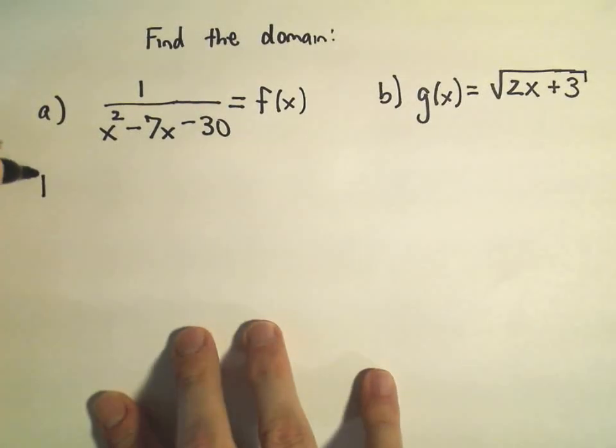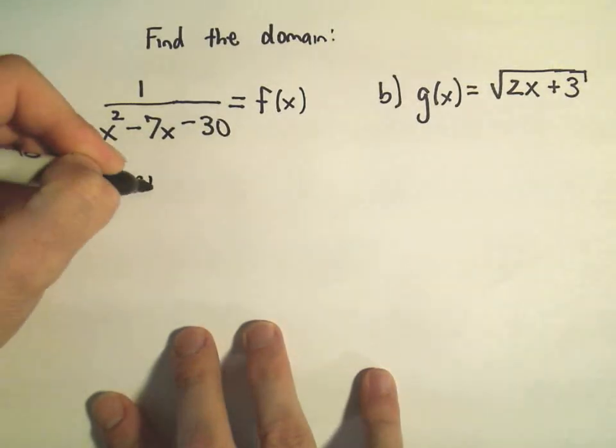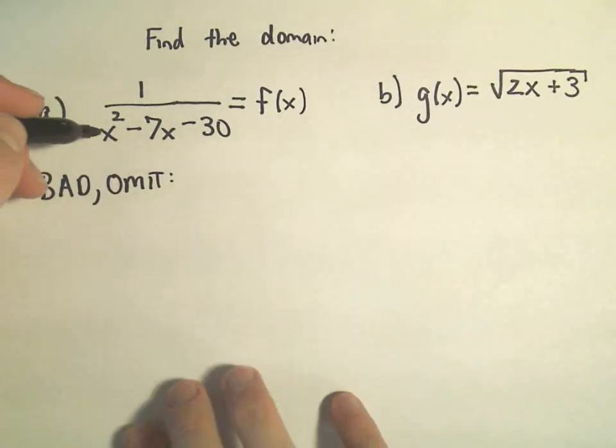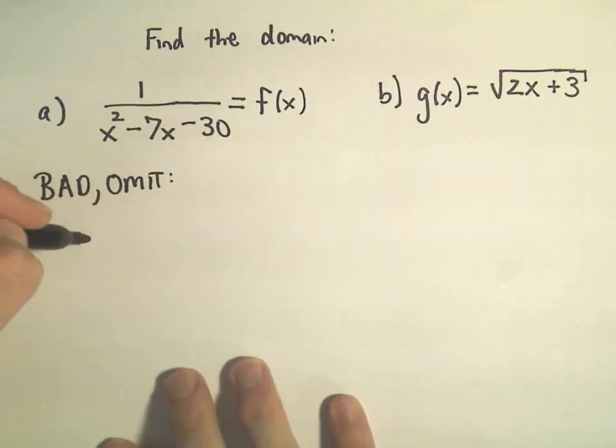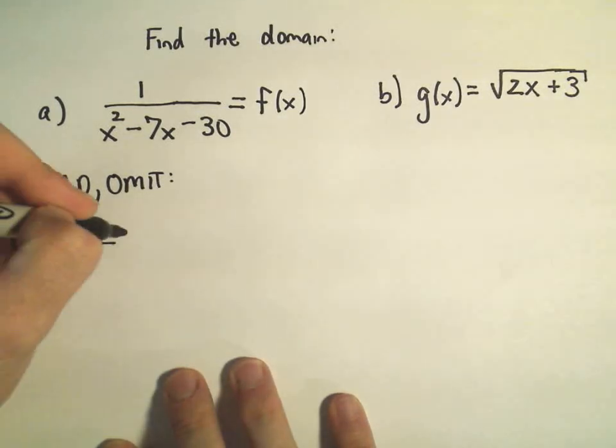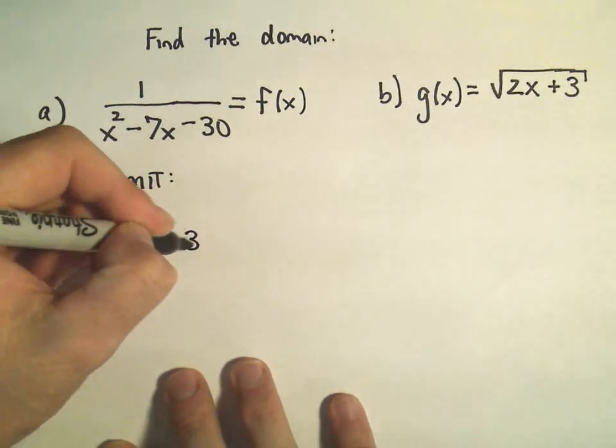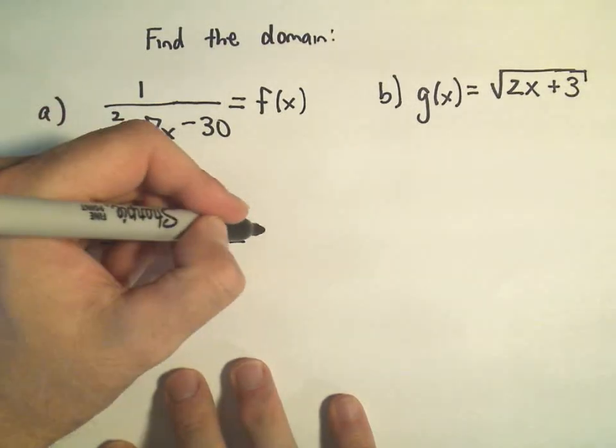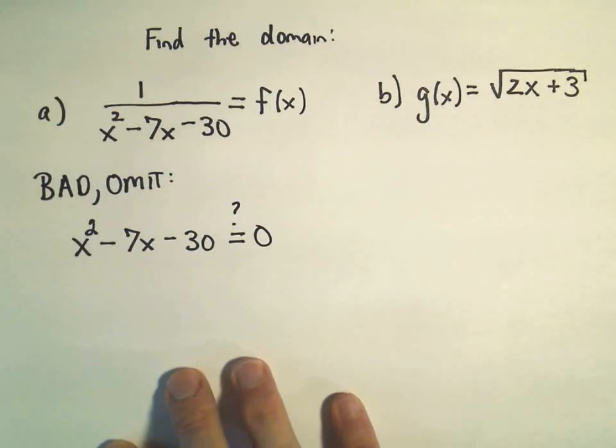So to me, the values that are bad, or the values that I must omit for this first equation, I don't want any value of x that makes the denominator 0. So I'm basically thinking, if I set the denominator x squared minus 7x minus 30, what makes that equal 0?